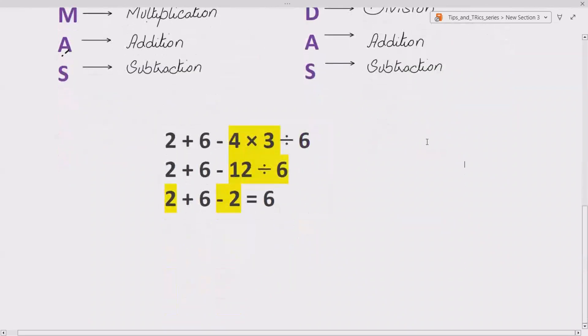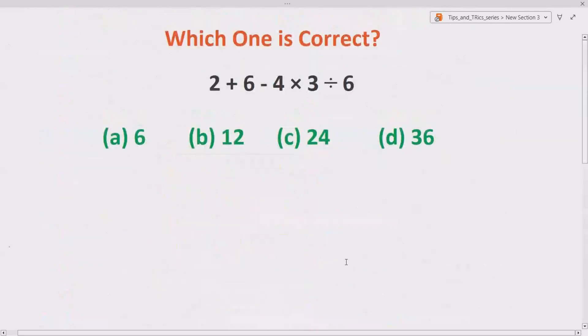But going from left to right, we do multiplication first. 4 into 3 gives us 12. Now we do division according to BODMAS and PEMDAS. Then 12 divided by 6 gives us 2. Now this minus 2 and this 2 will cancel out and we are only left with 6. So the correct option is (a). I hope you enjoyed this one.